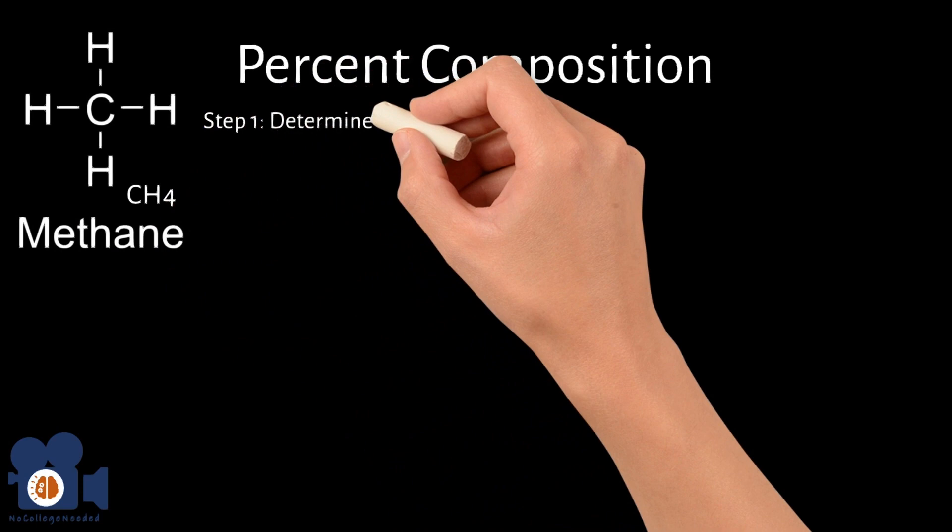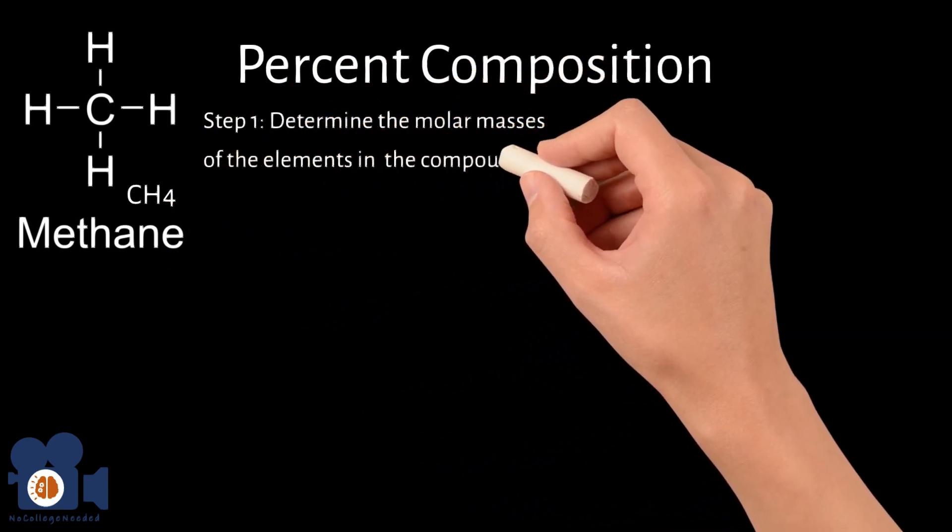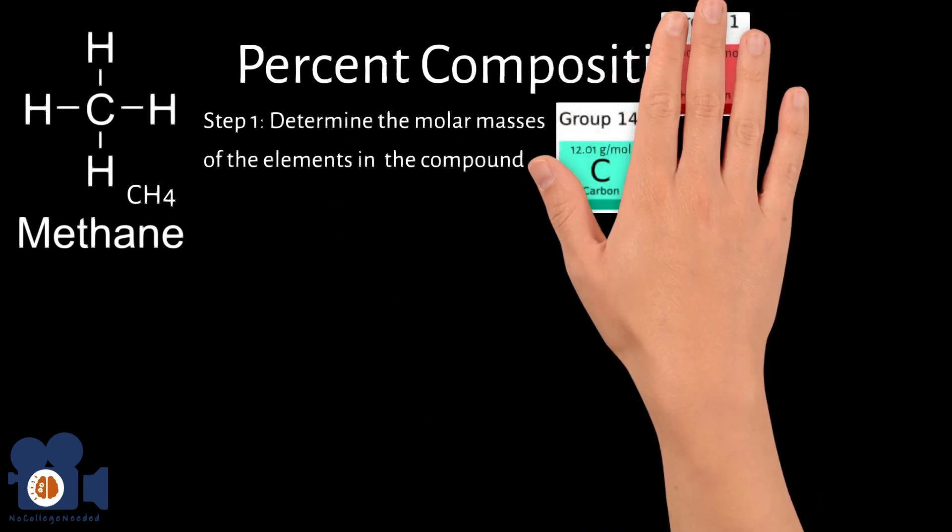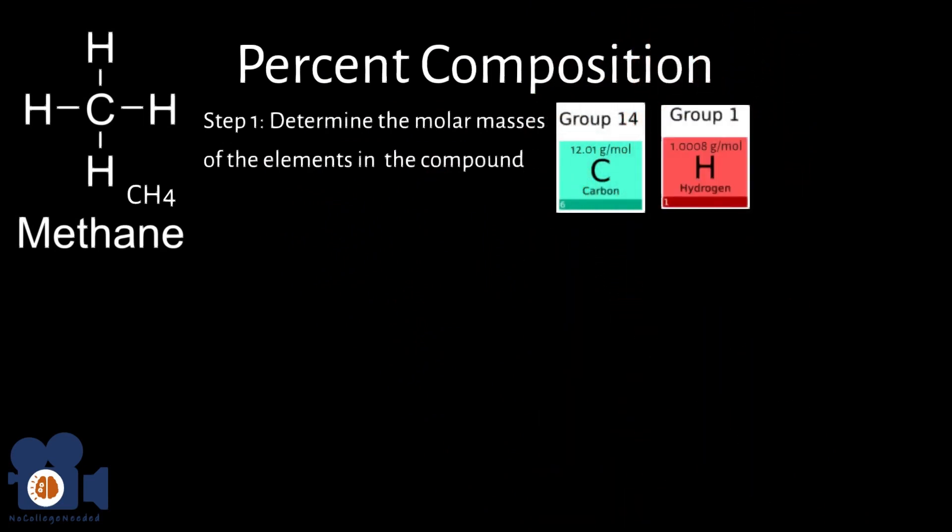Step 1: Determine the molar masses of the elements in the compound. The molar mass of carbon (C) is 12.01 grams per mole. The molar mass of hydrogen (H) is 1.008 grams per mole.